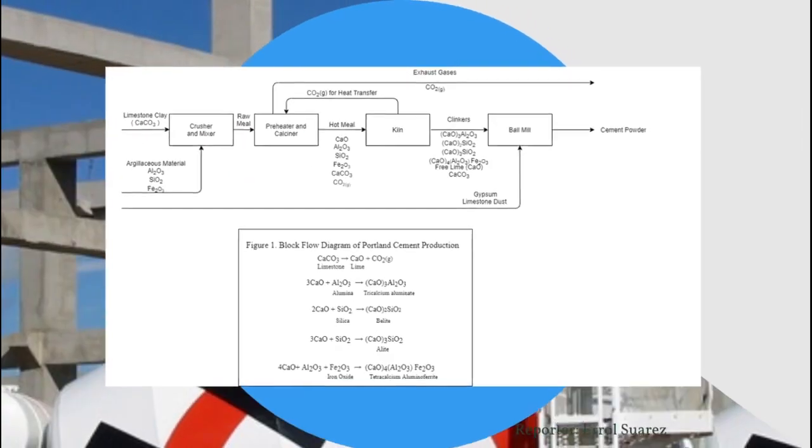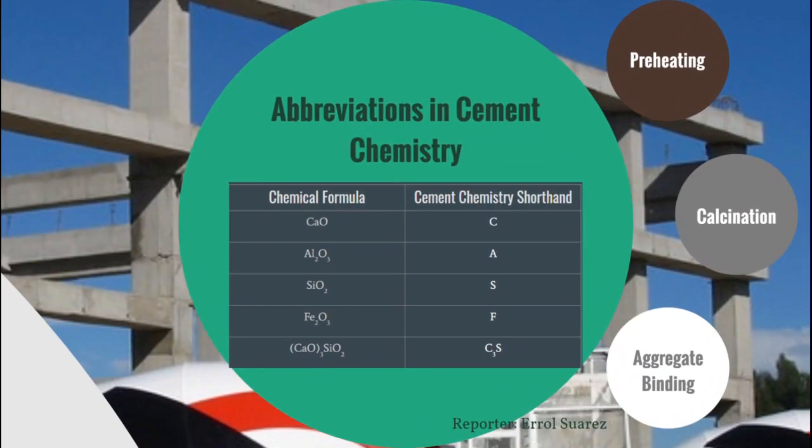Cement chemistry often uses abbreviations known as cement chemistry shorthand. Calcium oxide or quicklime is referred to as C, alumina as A, silica as S, and iron oxide as F. So tricalcium silicate or alite is called C3S, dicalcium silicate or belite is called C2S, and so on.